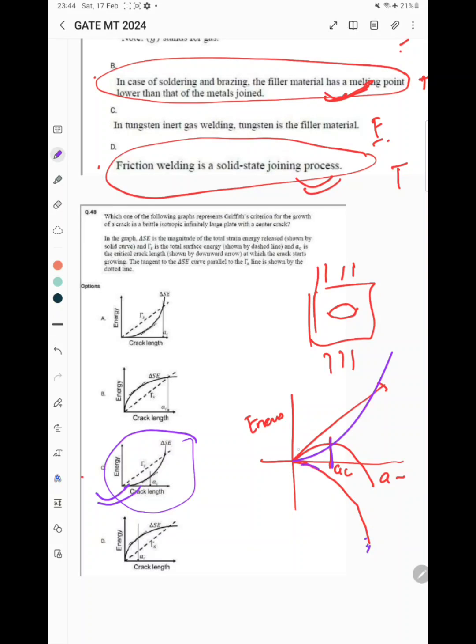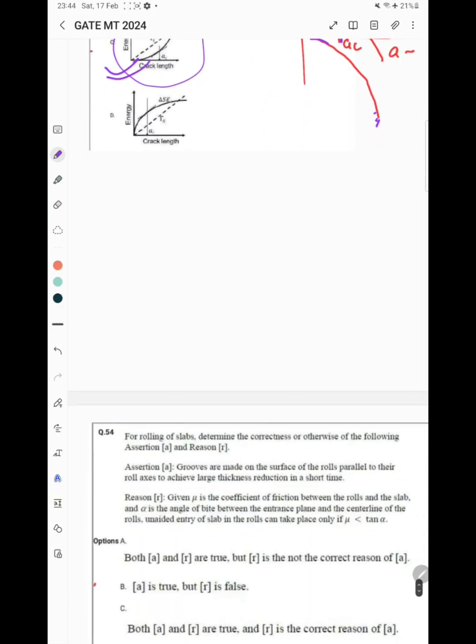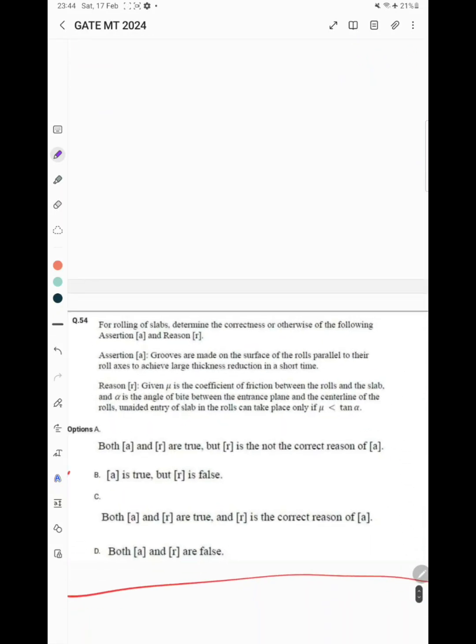The next question is regarding assertion and reason. The assertion is: grooves are made on the surface of rolls parallel to their roll axis to achieve large thickness reduction in short time. The reason given is: this improves the coefficient of friction between the rolls and the slab. Alpha is angle of bite between the entrance plane and center line of the rolls. Unaided entry of the slab in the roll can take place only if mu is less than tan alpha. Here A is true and R is false, so option B is correct.